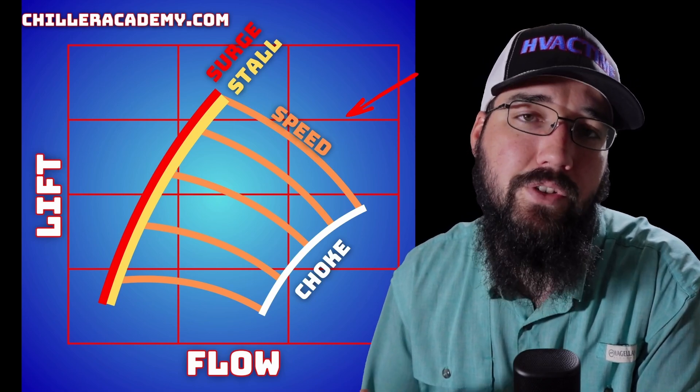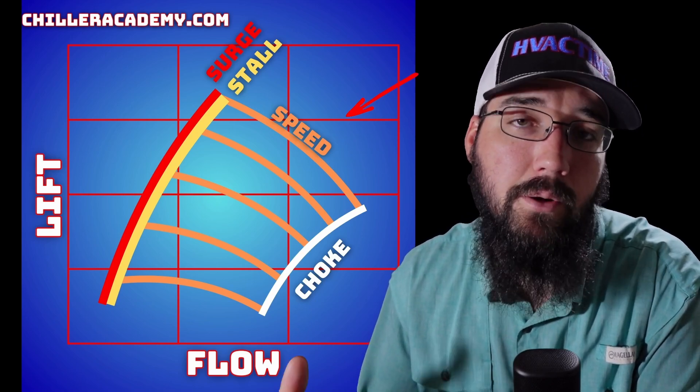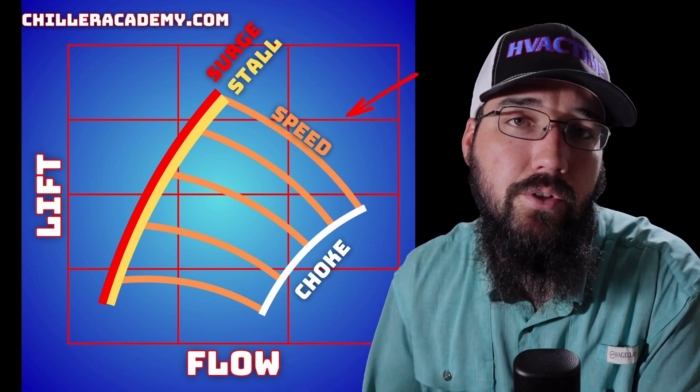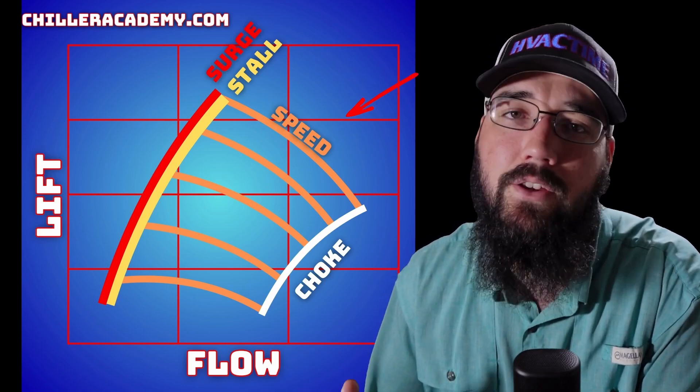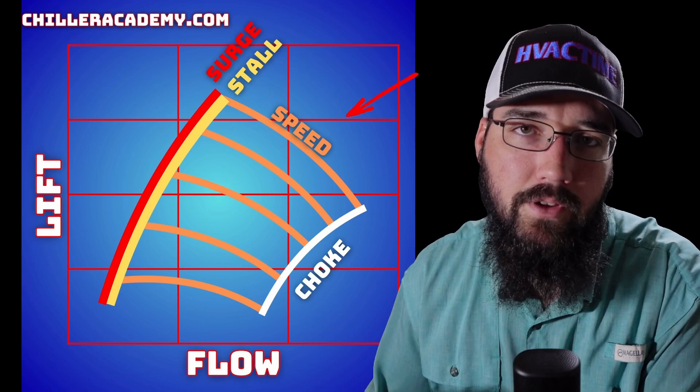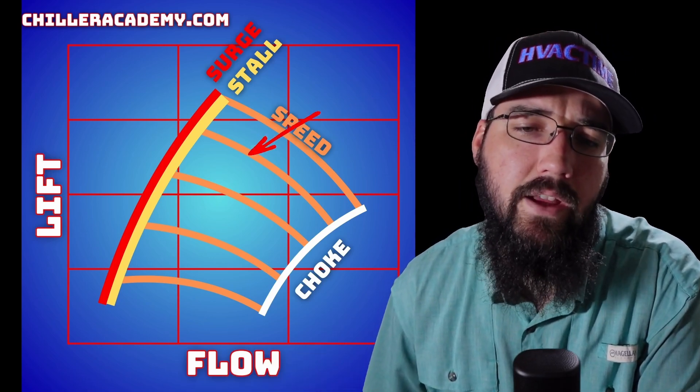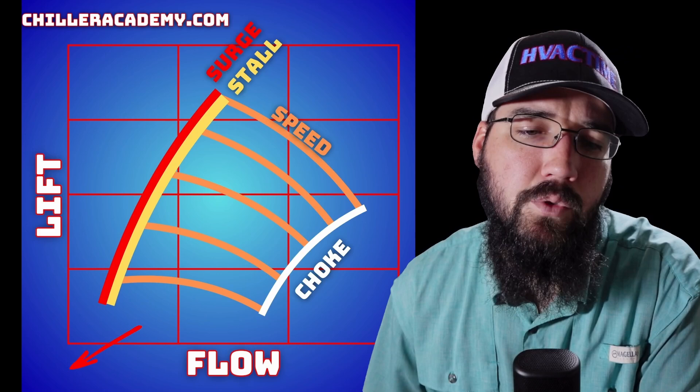Flow is how much volume is moving through our impeller. Another way to think about flow is what position are your IGVs, your inlet guide vanes, or if you're working on a York, a PRV, pre-rotation vein—they mean the same thing. So we have our graph here. This would be the lower end of it, and this is where your surge line is going to be, with a stall.